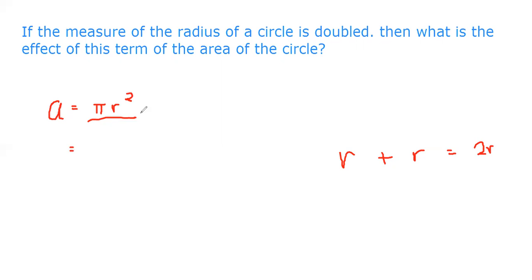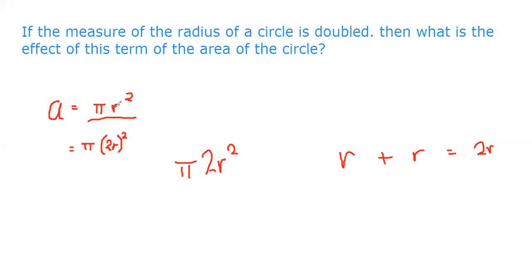Now we apply the formula with the new radius. We get A = π(2R)². Why write it as π(2R)² and not π·2R²? Because the entire quantity 2R is the radius being substituted, and squaring only 2 instead of the whole 2R would give a different, incorrect value. So the correct representation is π(2R)².